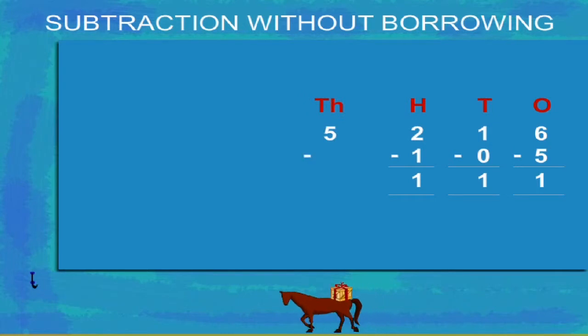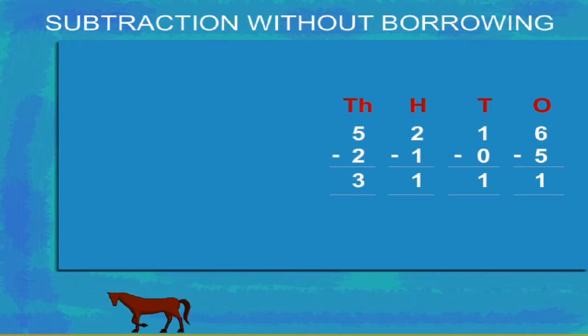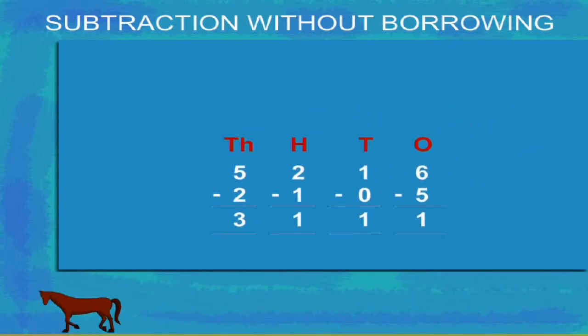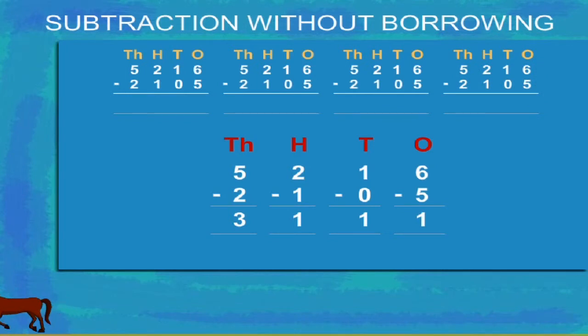And now the thousands. We have 5 thousands minus 2 thousands equal to 3 thousands. Let's join all this. It becomes 5216 minus 2105.